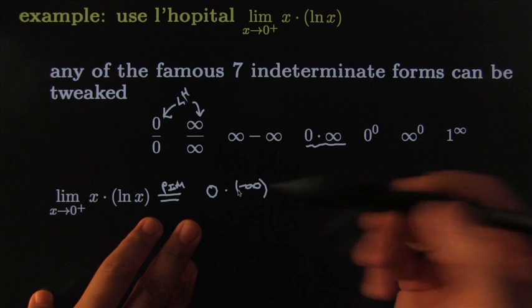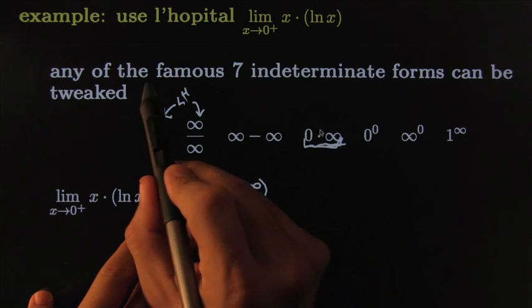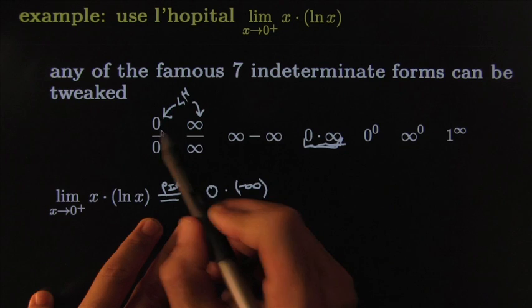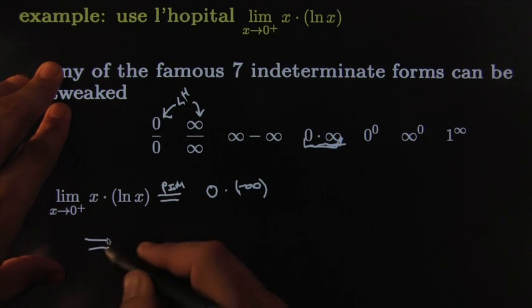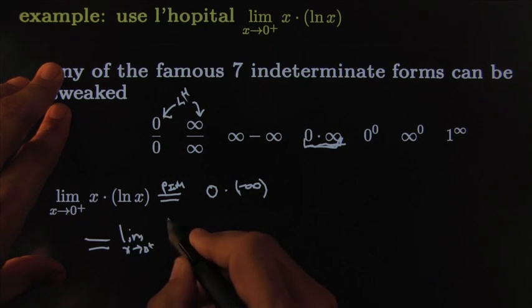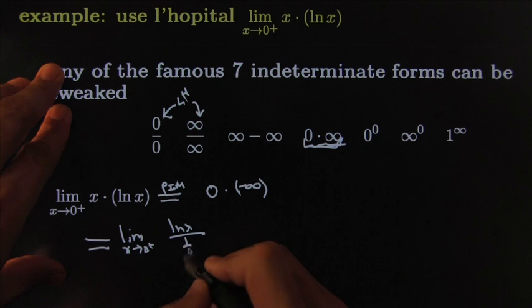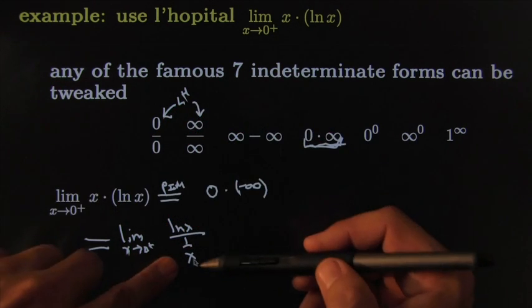I get this one, and the promise was that any of them can be tweaked into the L'Hopital form. So how are we going to tweak this? Easy, you just use your algebra skills and you say, well, that would be the limit as x goes to zero from the positive side of ln of x over one over x. So there's a famous algebra trick—it's the opposite of reducing complex fractions.